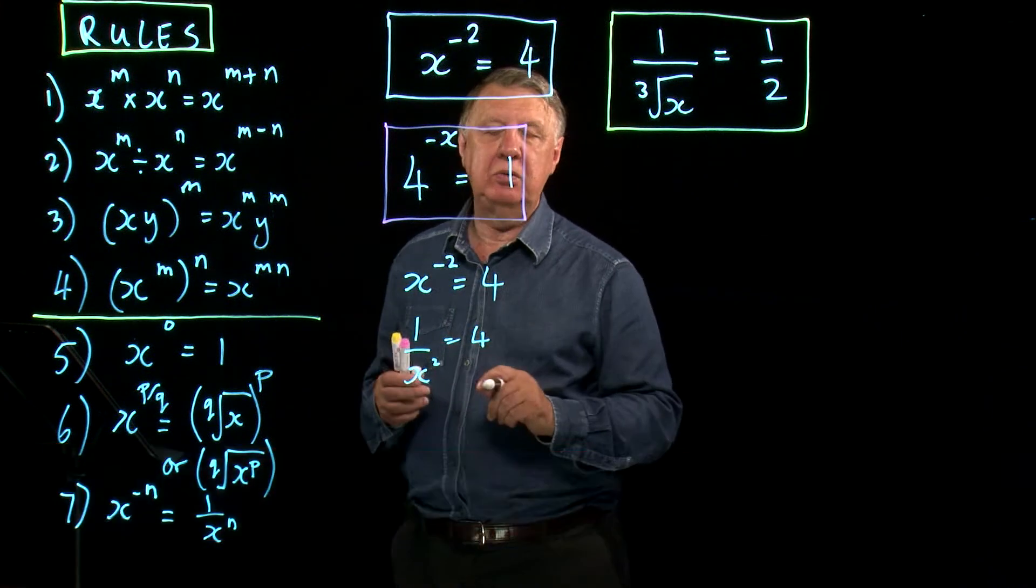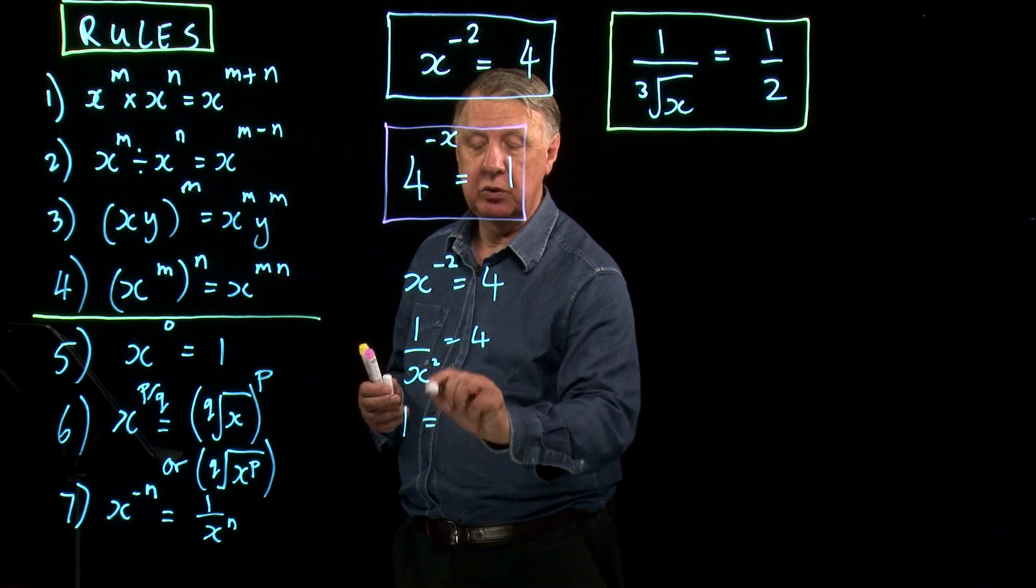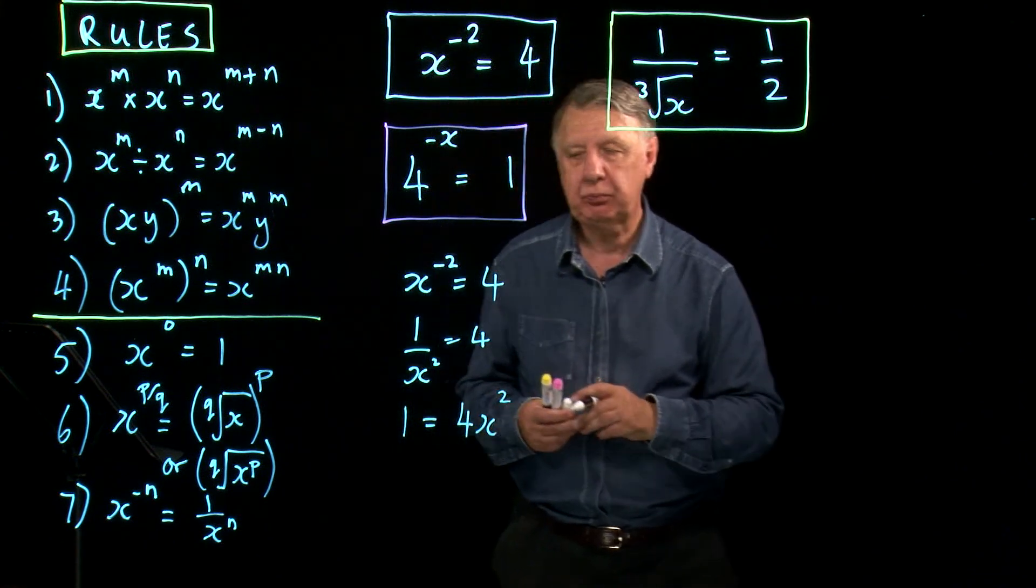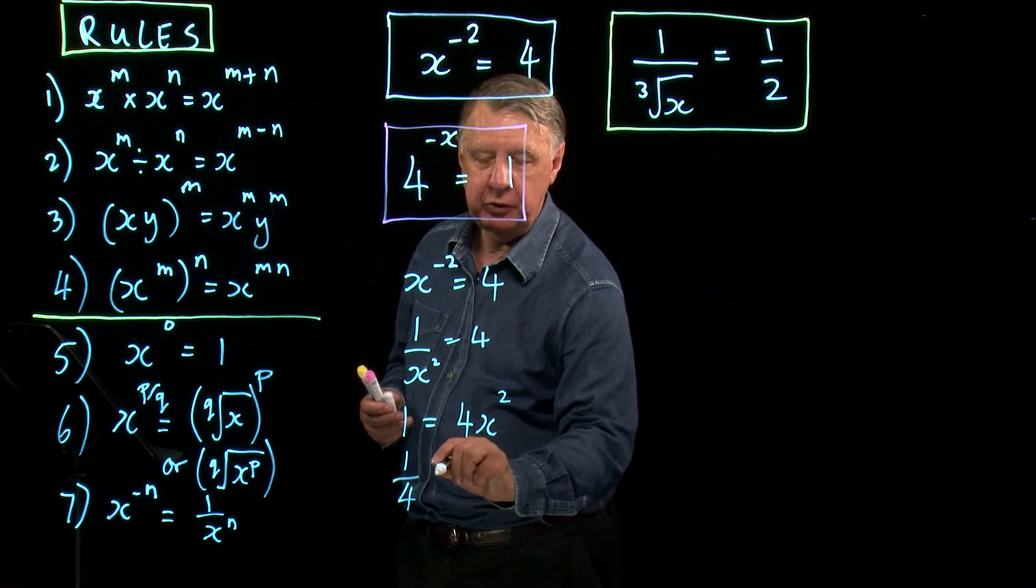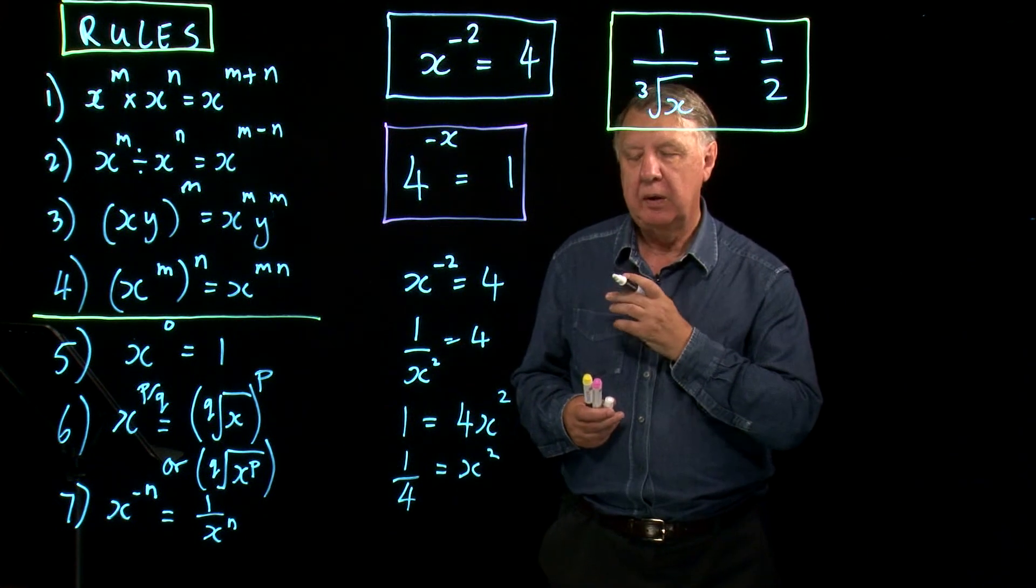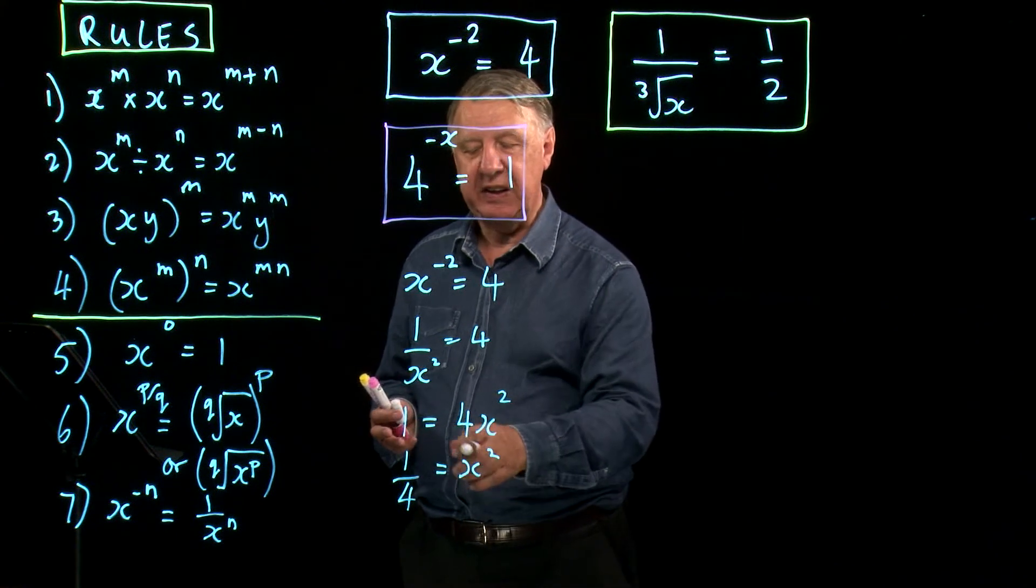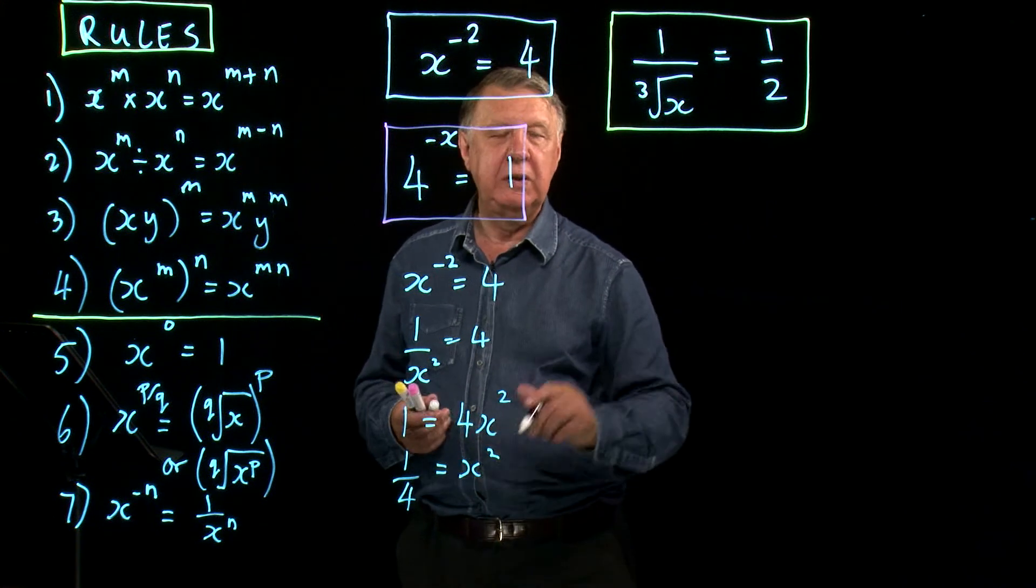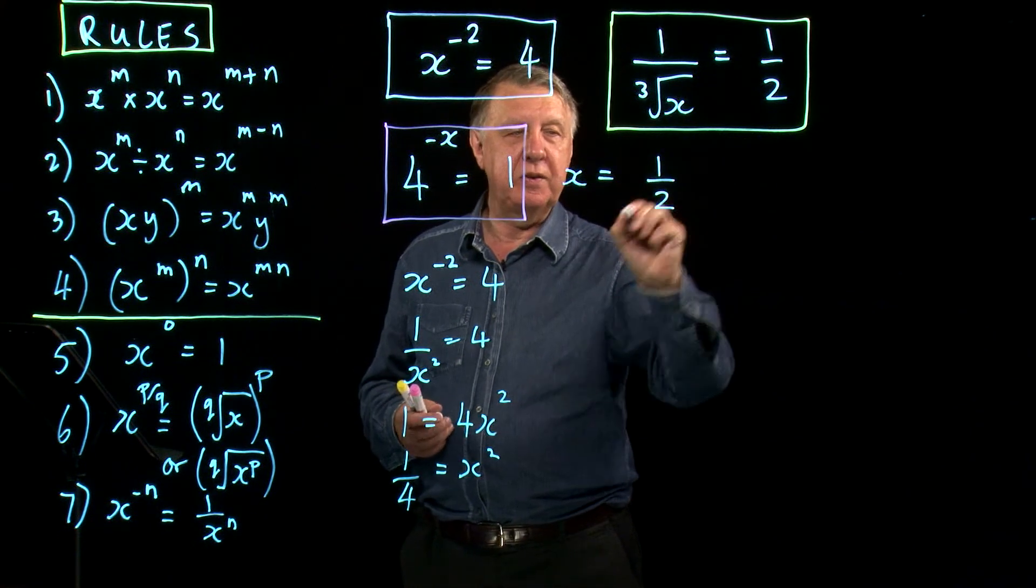If you now try and rearrange that, the first thing you probably would do would be 1 equals 4 times x squared. Then perhaps you might divide by 4 so you get a quarter equals x squared. Now it's like something you've met before. It's like a very easy quadratic equation. So you can take the square root and sadly lots of people will write down x equals a half.